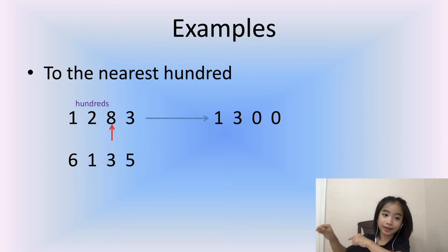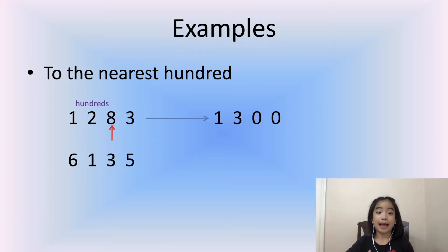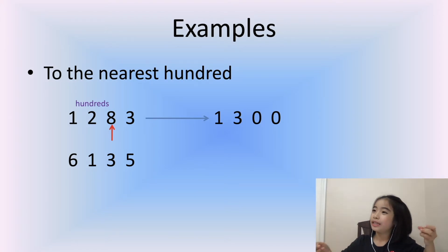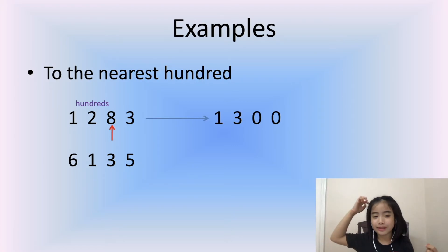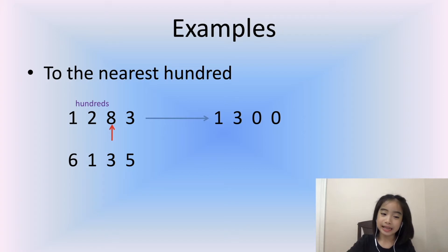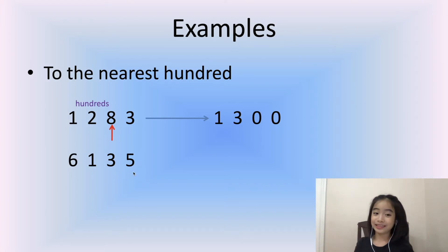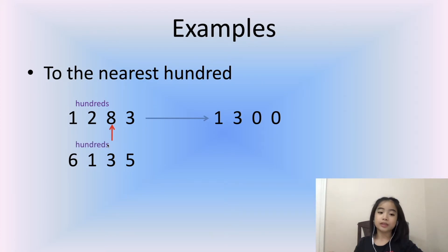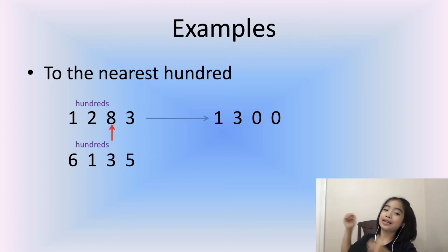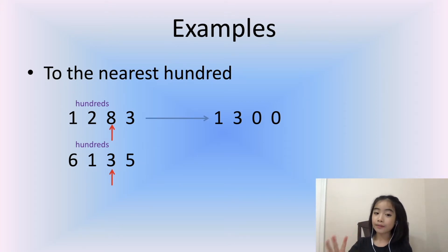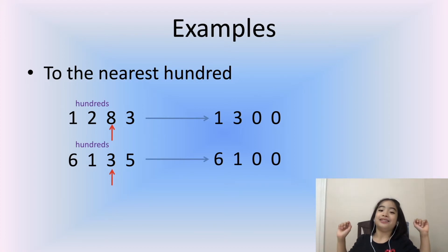Here's a little tip: in this case, the digit to the right of the hundreds position is 8, and you don't need to think about the ones position at all — it won't change the value. Now let's look at another example: 6,135. The 1 is in the hundreds position, and the digit to the right — in the tens position — is 3. Since 3 is less than 5, we round down to 6,100.